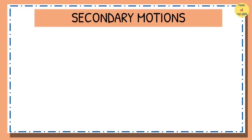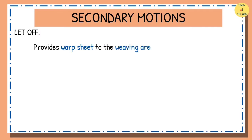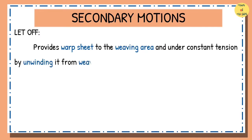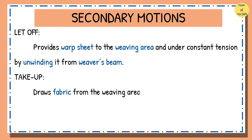The secondary motions facilitate the weaving of fabric in a continuous way. These include let-off, which provides the warp sheet to the weaving area at the required rate and under constant tension by unwinding it from the weaver's beam. Take-up motion draws fabric from the weaving area at a uniform rate to produce the required pick spacing and wind it onto a roller.